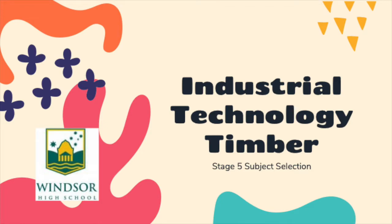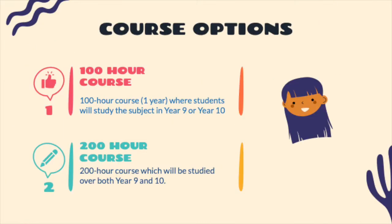Welcome to the Stage 5 Subject Selection Industrial Technology Timber. This course is offered as a 100-hour course for Year 9 or Year 10, or a 200-hour course over two years.